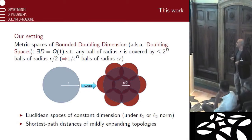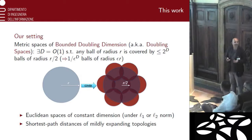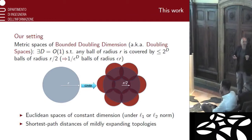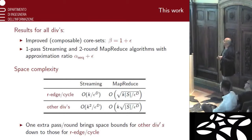It can be shown that Euclidean spaces of constant dimension — under rectilinear or L2 norm — have bounded doubling dimension. Other important applications include shortest path distances of topologies which are not too expanding, for instance meshes or multidimensional meshes. Our algorithms have very tight analysis for this specific setting and we have hard guarantees. But our algorithms are general and also apply to spaces where the doubling dimension is not known — this is the practical relevance of our approach.